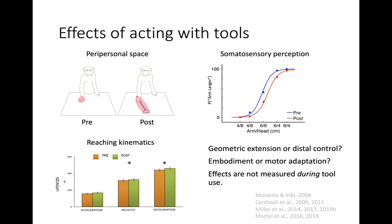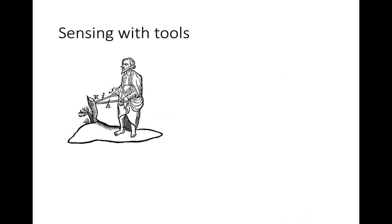Given these limitations, we wanted to investigate ways to address embodiment during tool use. That led us to think about not just using a tool to pick up an object, but actually sensing with tools. If we go back to the blind person navigating the world with a cane, they are essentially using the dynamics of the tool to augment their loss of visual sense in order to create a perceptual image of the environment.